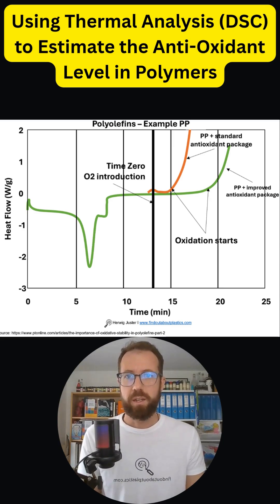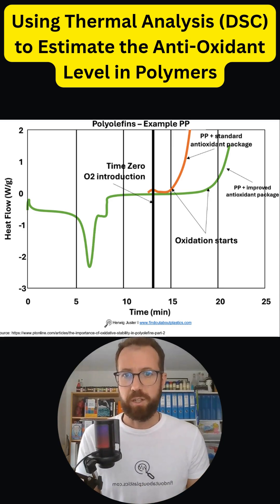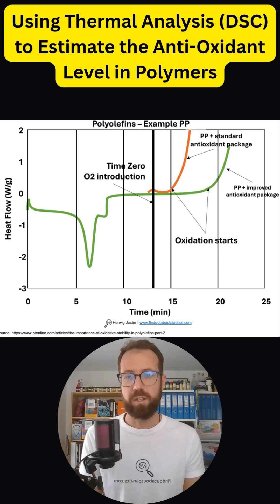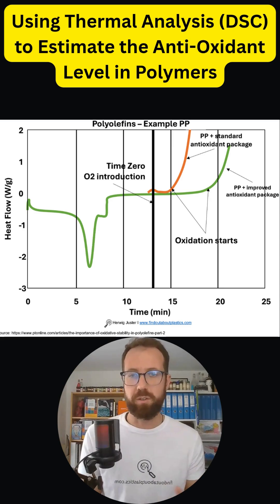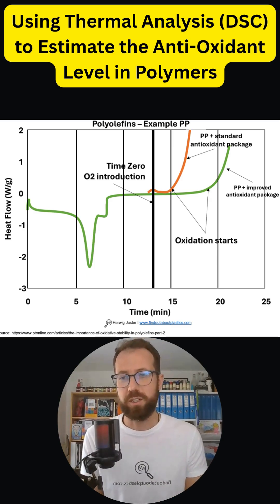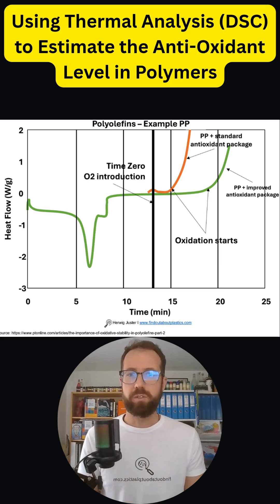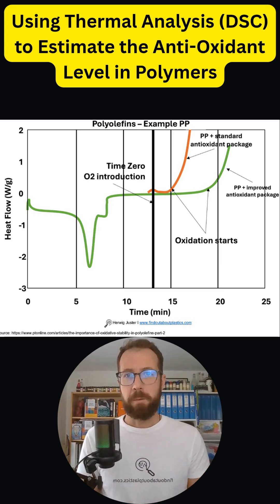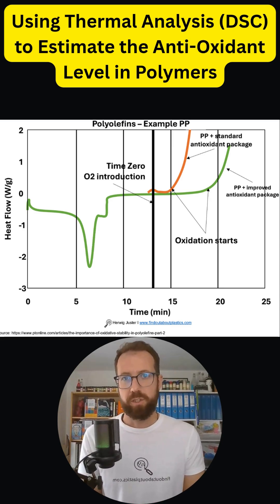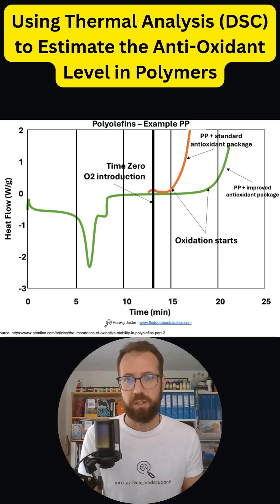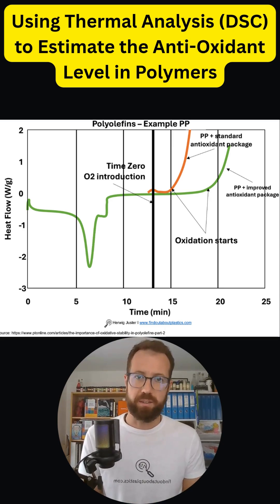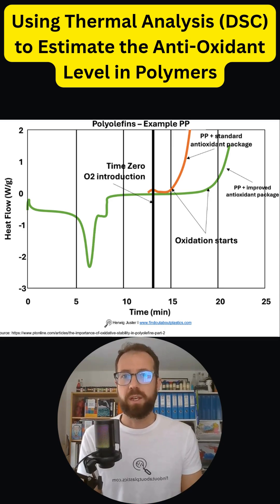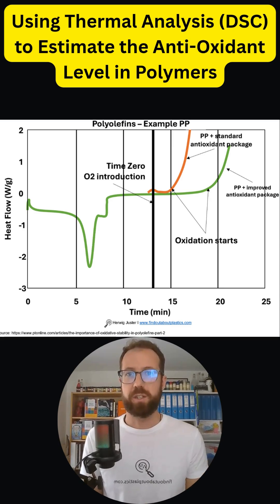We can measure the oxidation onset, and this is called the oxidation induction time — the OIT. Above me you can see an example of polypropylene: one with a standard antioxidant package shown in orange, and another with an improved antioxidant package.